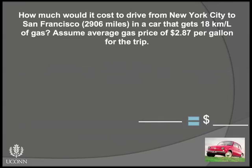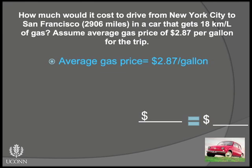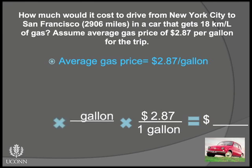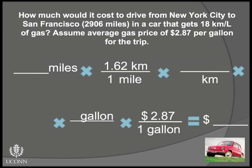Working from the end, we know that the unit on top of the last conversion factor has to be dollars, so we can put that there now. Going back to our list of knowns, the only factor that has dollars in it is the average gas price, so we can insert those values as our last factor. Working backward, we move the unit on the bottom of the last factor to the top of the one before it. Since the only other thing that involves kilometers is the fuel economy of our European import — giving a relationship between distance and volume of gasoline — we can put that in as our conversion factor here.